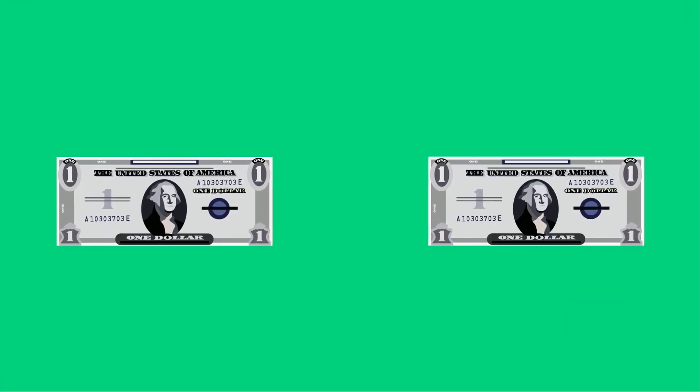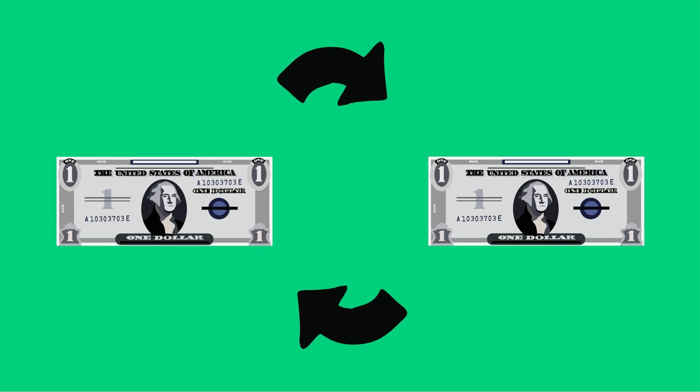Dollar bills are a really good example of this. Every one dollar bill is equal to every other one dollar bill. It doesn't matter if the dollar bill is old, new, crumbled, or crisp. One dollar is worth one dollar no matter what, and it can be traded for any other one dollar bill.